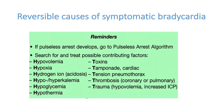Some books mention 6 H's and 6 T's, where thrombosis is counted as two — coronary thrombosis (MI, inferior wall MI) and pulmonary thrombosis. So remember 5 H's and 5 T's.